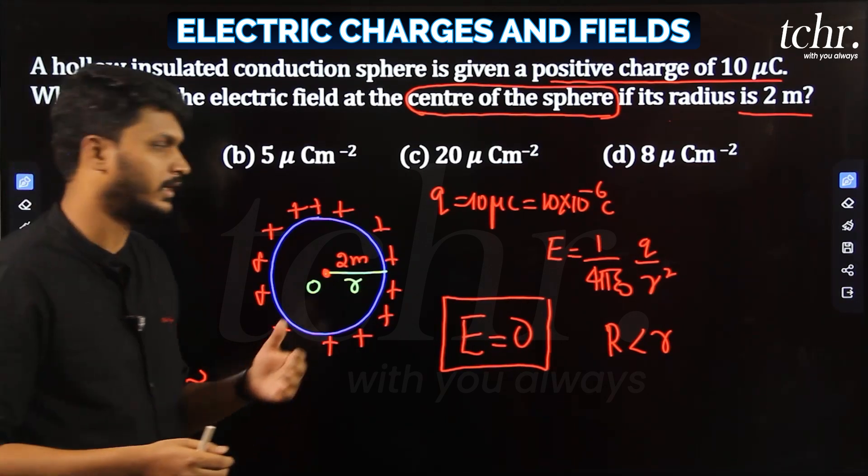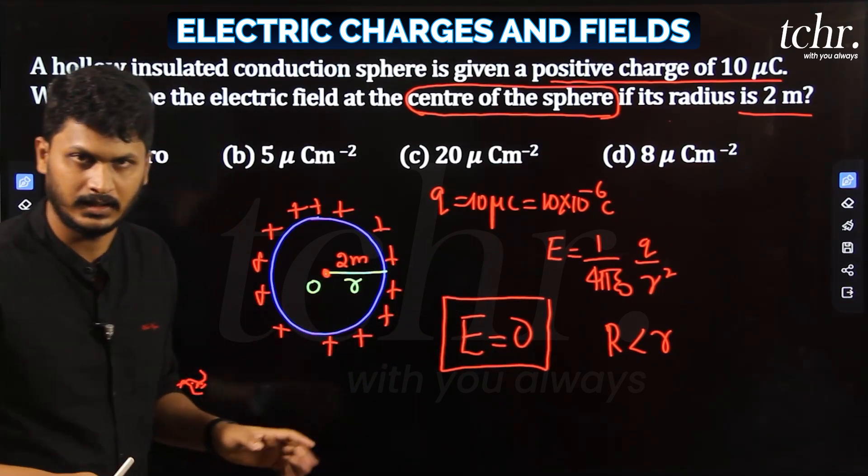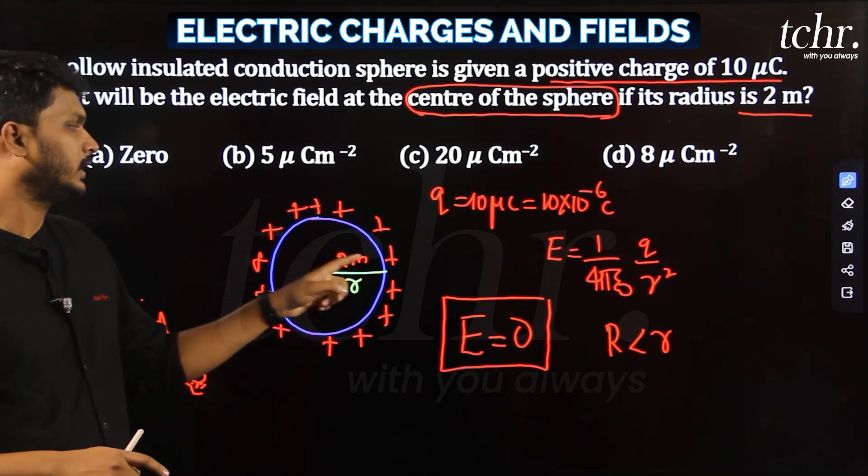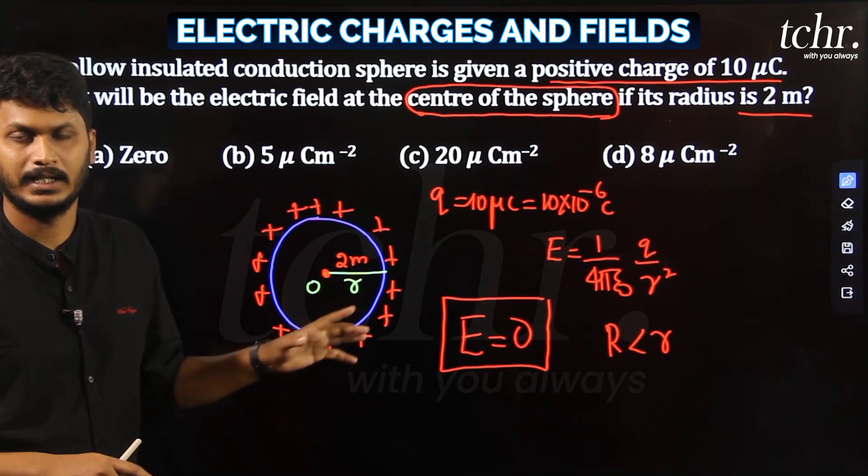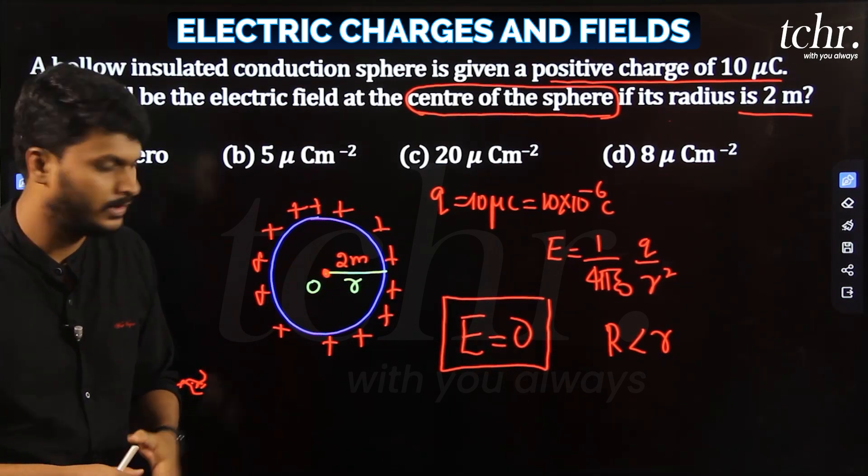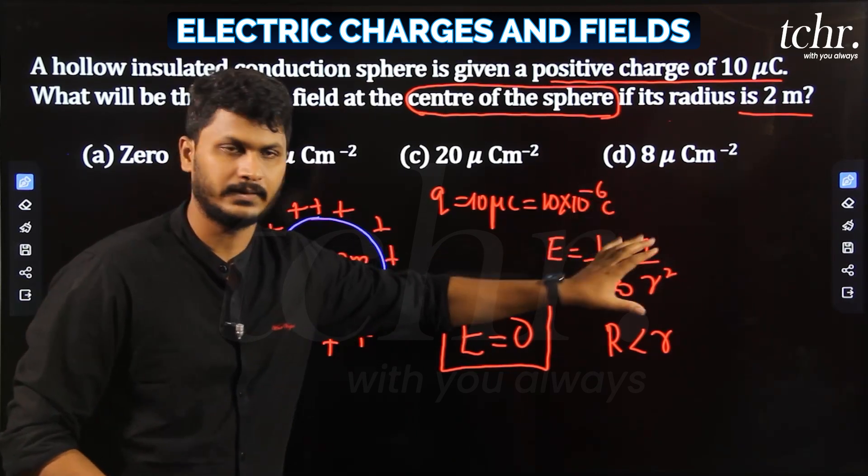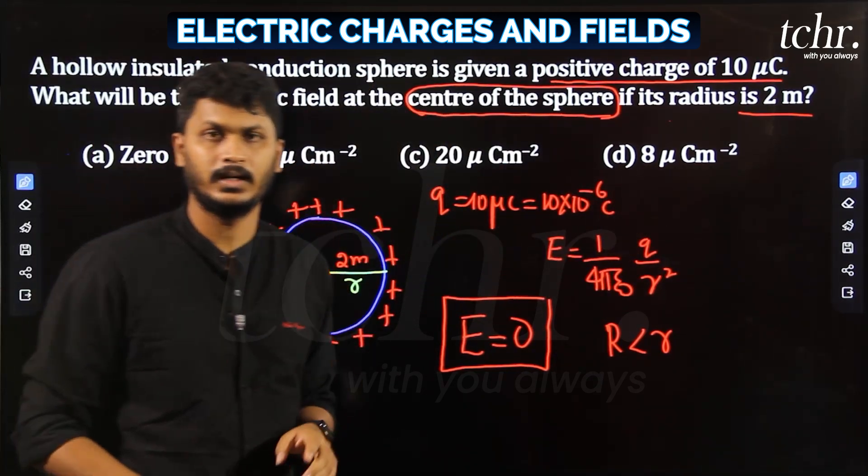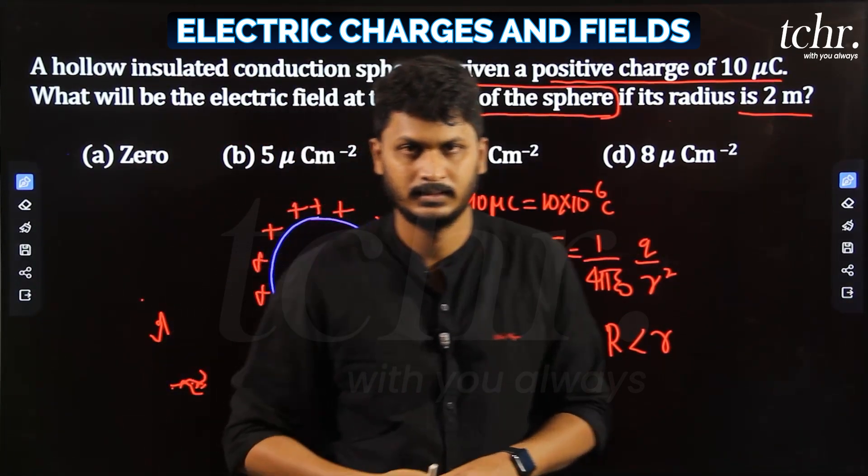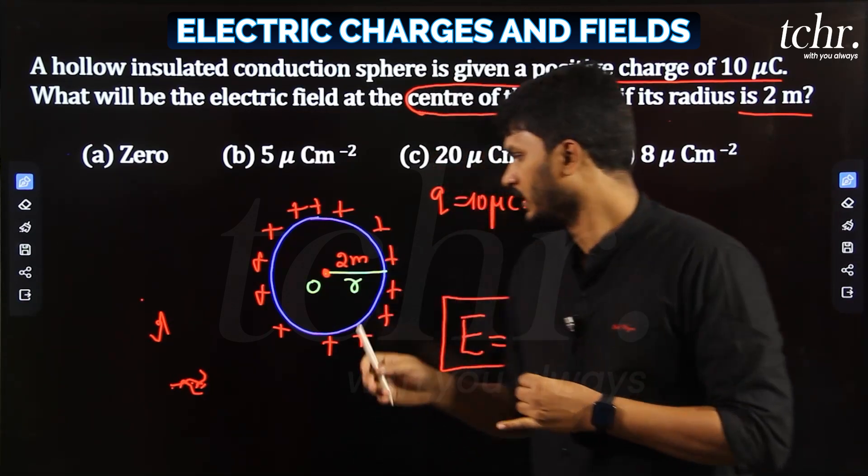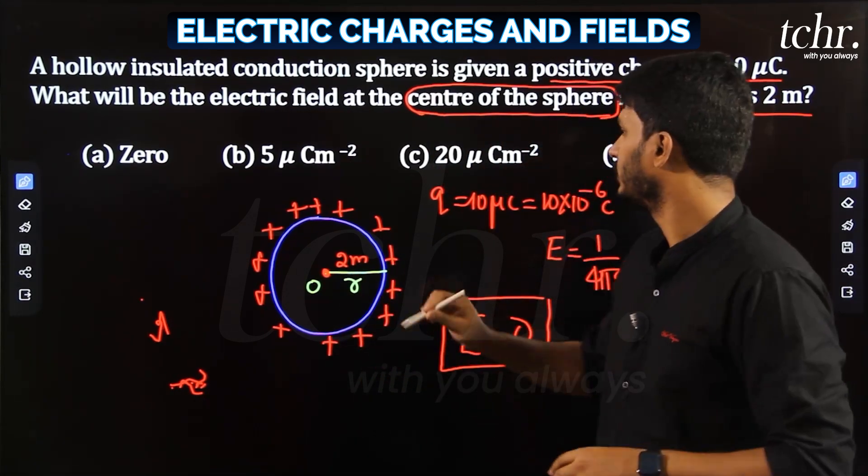Because inside the surface there are no charges. If there are no charges, there's no electric field. That's why, remember, inside any conducting sphere, electric field is always zero. Outside, then you can make use of this formula. That's why this question gives you the answer for two or three problems.